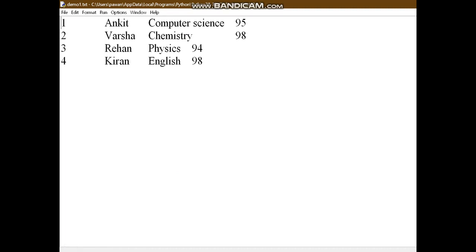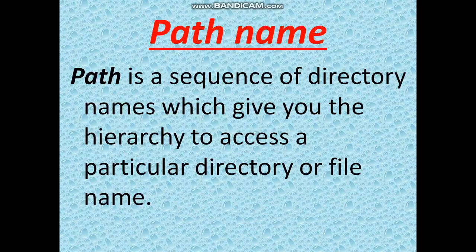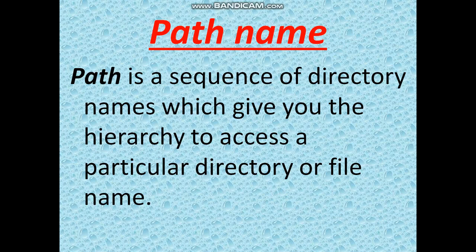The next topic is path — absolute path and relative path. First, what is a path? A path is a sequence of directory names which gives you the hierarchy to access a particular directory or file. If you want to find a file's path, right-click on the file, click on Properties, and the Location field shows the exact path of the file.